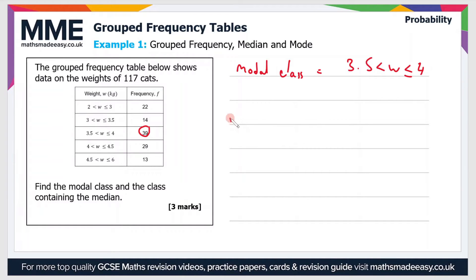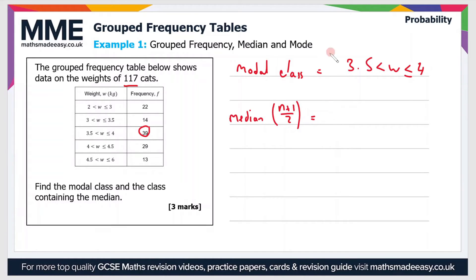As for the median, the position of the median is given by n plus 1 divided by 2. In this case, n is 117, so n plus 1 over 2 is 118 over 2, which gives us the 59th value.